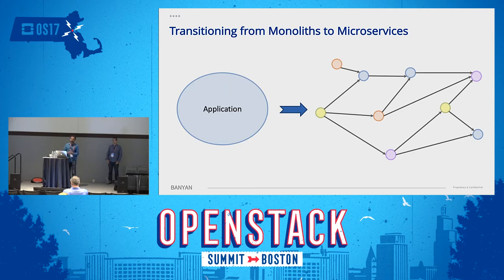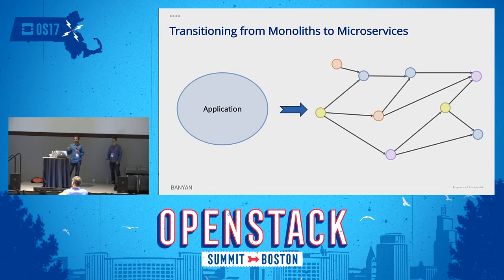What are microservices? Microservices is a software architecture which takes big applications and breaks them down into small pieces, each being a function-specific piece that can be developed, managed, and deployed independently. Each component can specify an API with which other components need to talk to it, so each individual component can be developed and enhanced independently very quickly.